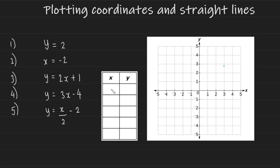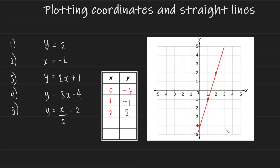Now let's do the same for equation four, y equals three x minus four. We pick three values for x — zero, one, and two. Be careful: if your values start becoming too high, your y values might go outside the graph, so use smaller or even negative x values if needed. When x is zero, y is three times zero minus four, which gives negative four. When x is one, three times one is three, minus four is negative one. And when x is two, three times two is six, minus four is two. We plot these coordinates, connect the dots, extend the line — and this is the line with equation y equals three x minus four.